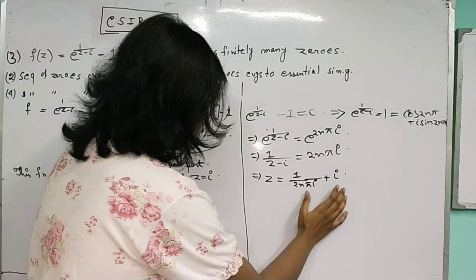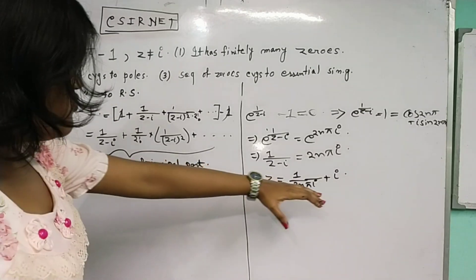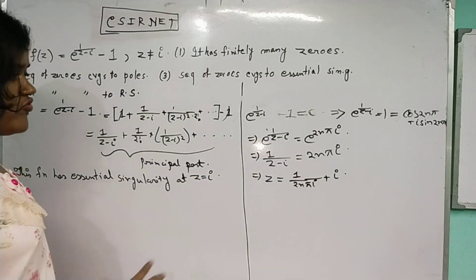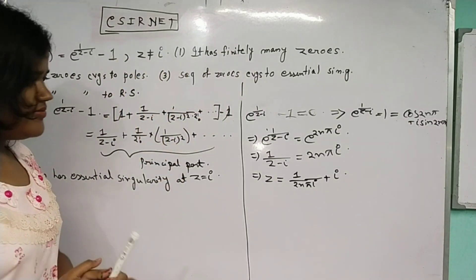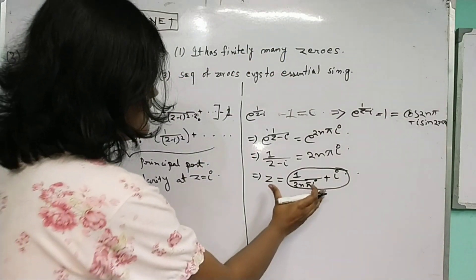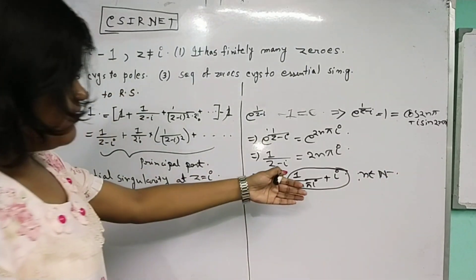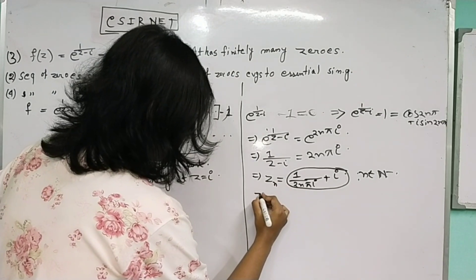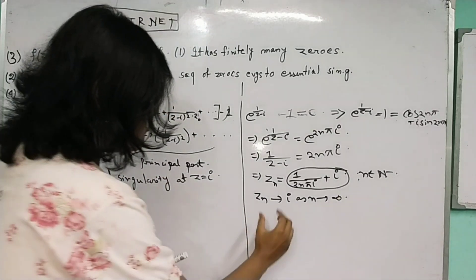This is the set of zeros of the function. They are asking where this sequence of zeros converges. If I denote this sequence as z_n, where z_n = 1/(2nπi) + i, then z_n converges to i as n tends to infinity. This is clearly understandable — z_n tends to i as n tends to infinity.